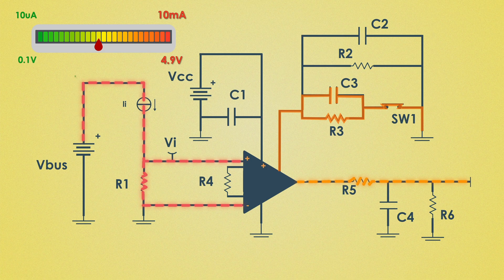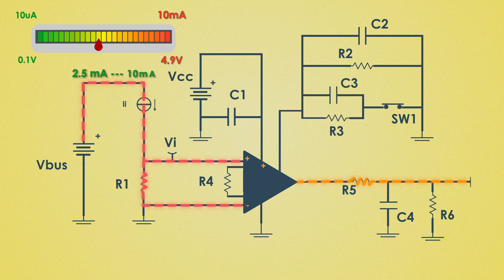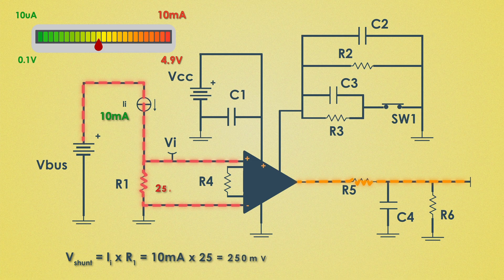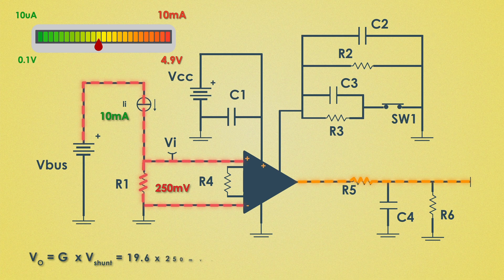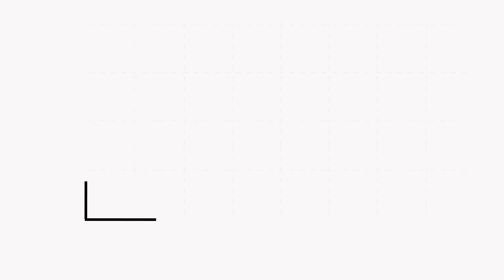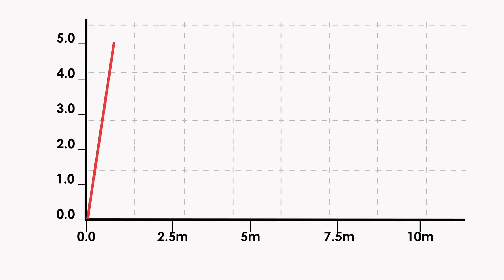So for the current from 2.5 milli amperes to 10 milli amperes this gain is optimum. If the input current is 10 milli amperes then the voltage drop across this shunt resistor will be 250 mV and with the gain of 19.6 the amplifier will give value of 4.9 volts to showcase this current. This dynamic adjustment in gain allows the circuit to maintain output voltage within its operational range.